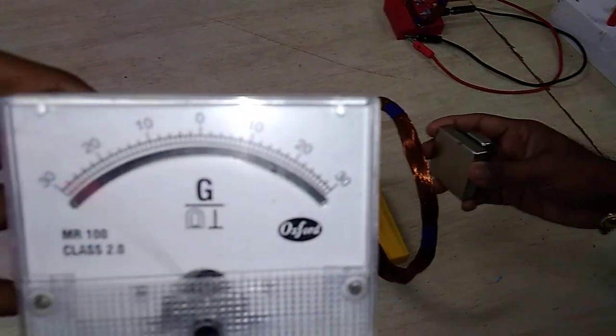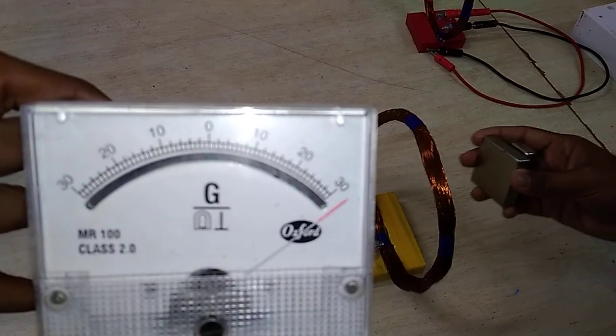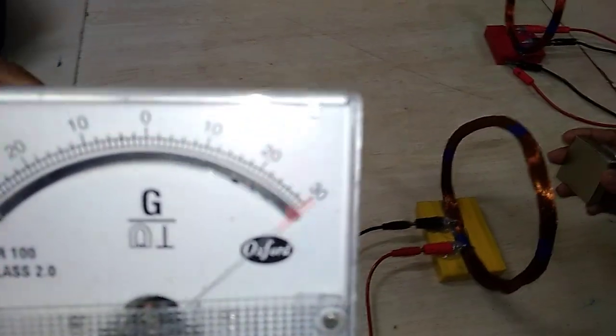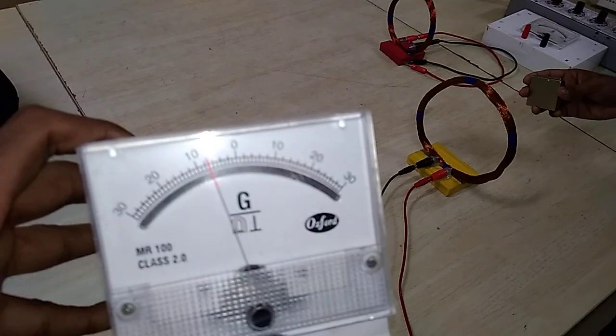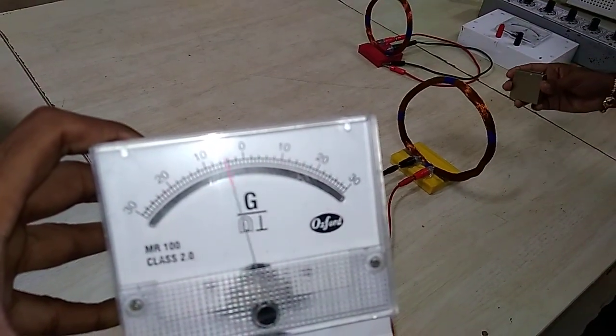The greater the force, the more the current. If I reduce the flux linkage, the deflection will be reduced.